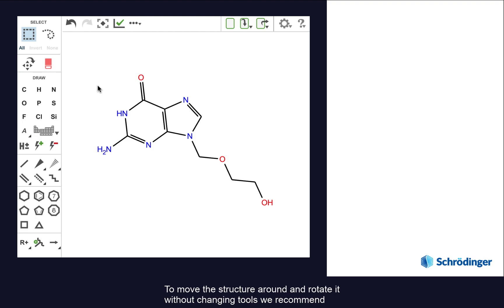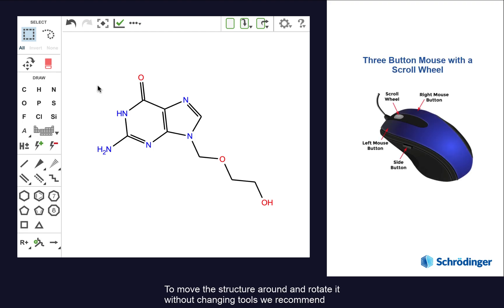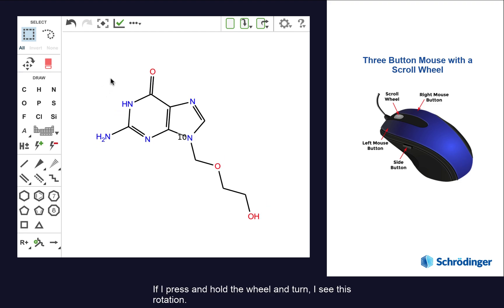To move the structure around and rotate it without changing tools, we recommend using a three-button mouse with a scroll wheel. If I press and hold the wheel and turn, I see this rotation.